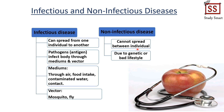The main reason for infectious disease to happen is because of pathogens. Pathogens are organisms that cause disease. Pathogens can transmit infectious disease through mediums such as air, food intake, contaminated water, and human contact, or through vectors such as mosquitoes or flies. As for non-infectious disease, the main reason is due to genetics or bad lifestyle.